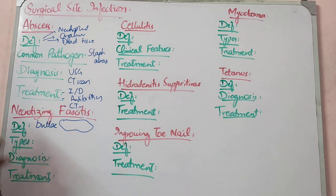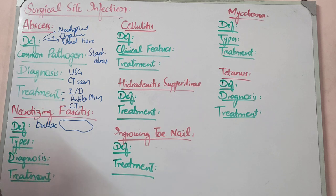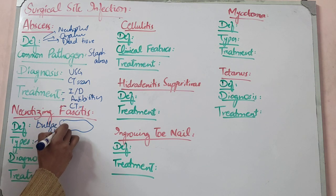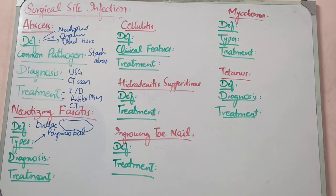Necrotizing fasciitis is an infection involving the deep fascia and muscles. We call it non-clostridial gas gangrene because clostridium is not the organism. The skin, deep fascia, and infection involving different organisms spread widely and become a life-threatening infection. There are two types: one is polymicrobial, involving different microorganisms including coliforms and bacteria.